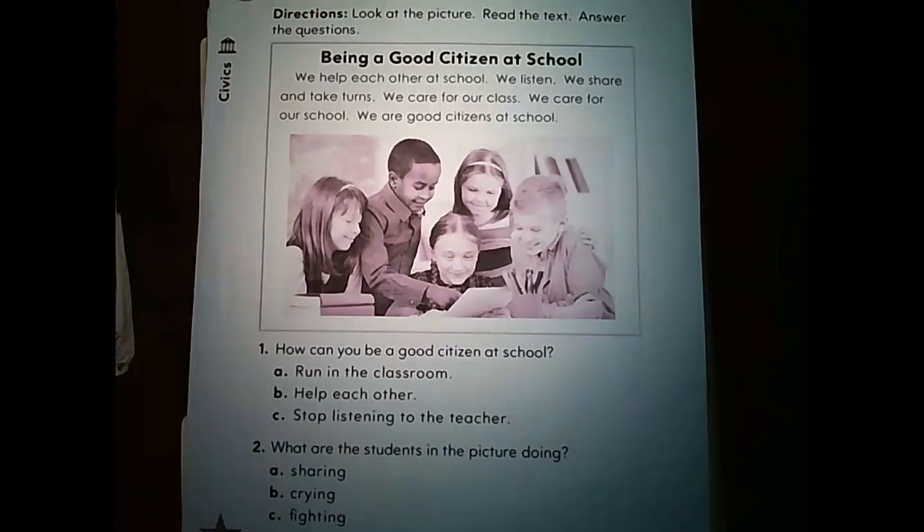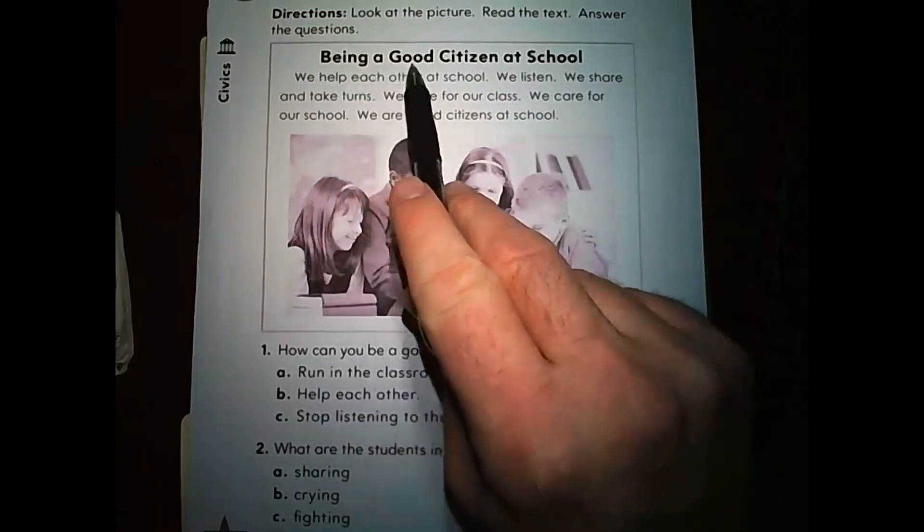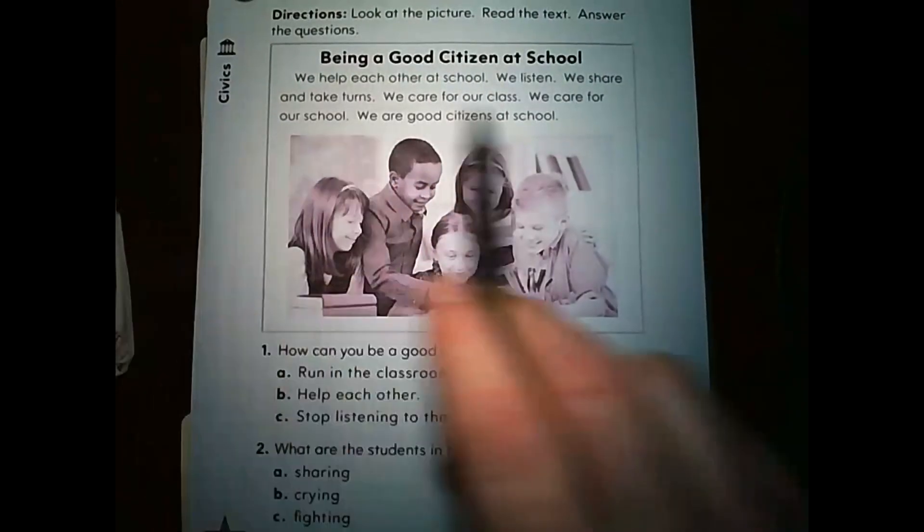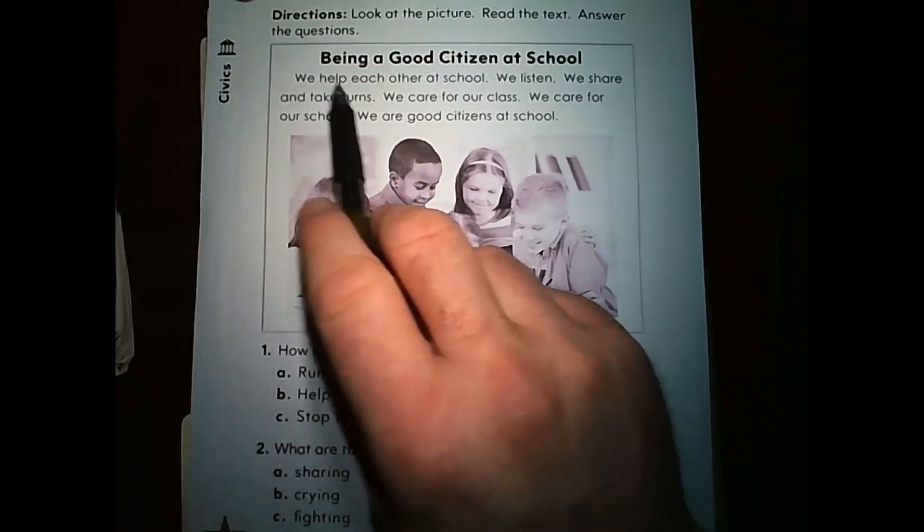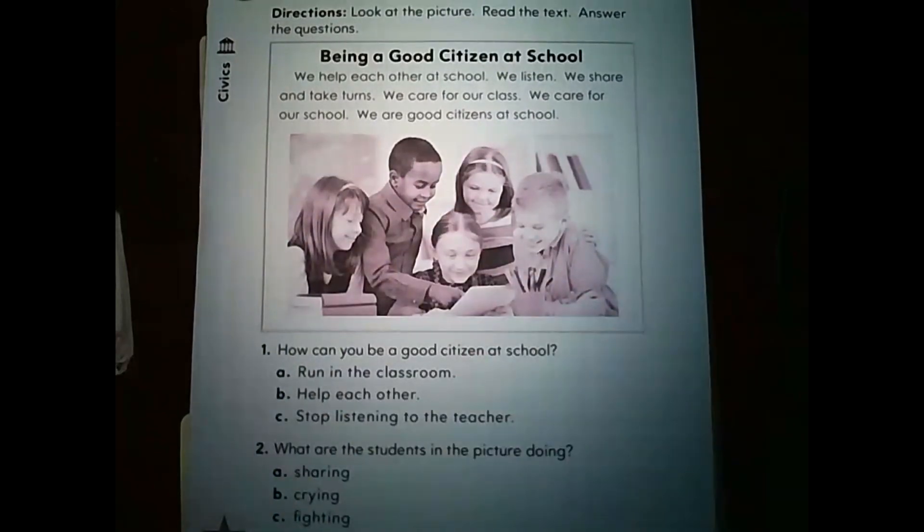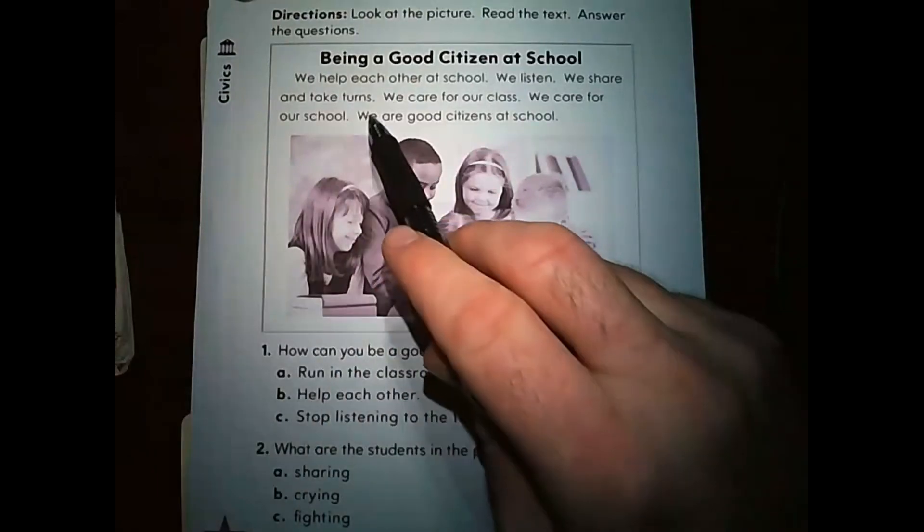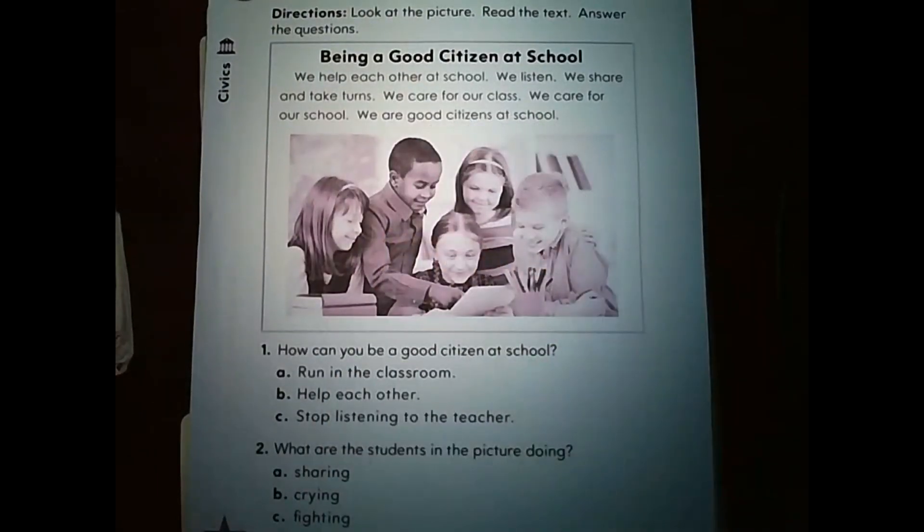We're going to go ahead and jump to the last page now. And we're actually moving away from timelines, and we're going to be starting, this is the introduction to our new unit, being a good citizen. And you'll notice that this activity is called being a good citizen at school. Let me go ahead and read this passage to you before we jump into the questions. We help each other at school. We listen. We share and take turns. We care for our class. We care for our school. We are good citizens at school. If you look at this picture here, everybody looks like they're sharing. They're being nice with one another. They are just getting along. And that's pretty good. Let's go ahead and look at the questions now.